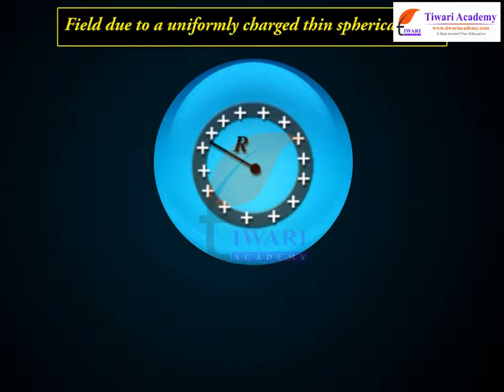We will now apply Gauss's Law to find the field outside uniformly charged solid sphere of radius R and total charge Q. In this case, Gaussian surface would be a sphere of radius r greater than R, concentric with the charged solid sphere.